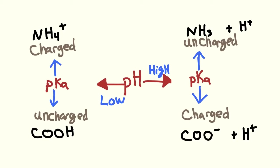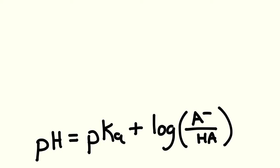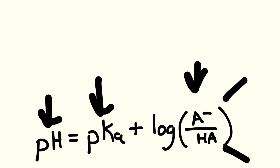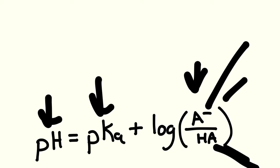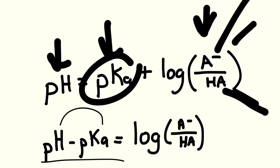As a reminder: pKa tells you what the pH is when you have an equal number of things that are protonated and unprotonated. When the pH equals the pKa, half of your molecules will be charged and half will be uncharged. The Henderson-Hasselbalch equation from general chemistry tells us that pH equals pKa plus the log of the concentration in the basic form over the concentration in the acidic form — in other words, the deprotonated versus the protonated. We can rearrange this so that pH minus pKa equals log base 10 of the unprotonated form over the protonated form.